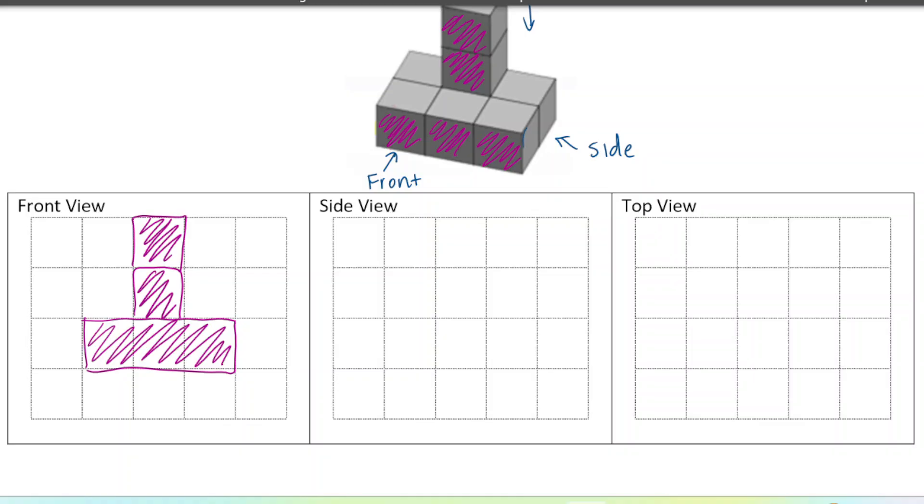And then from the side, we would see these two and then another two squares on top. So it looks something like this. Again, you don't see any depth. And this would help you, drawing these views would help you calculate the surface area as well.